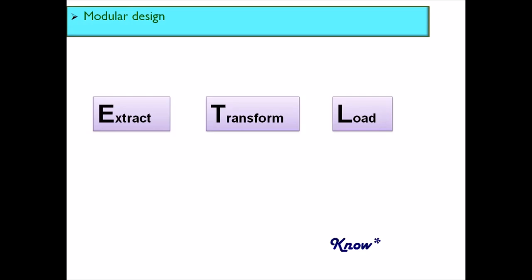Even if no error occurs, a single job with all the logic might actually take more time than splitting it into three separate jobs. So always remember: split jobs at proper logical points, make a modular design, and ensure that design is scalable — so that when logic changes, you can make changes without creating extra jobs or reworking significantly.